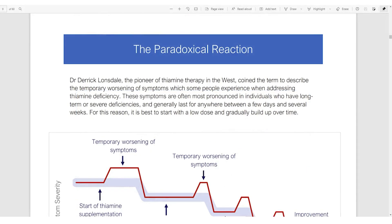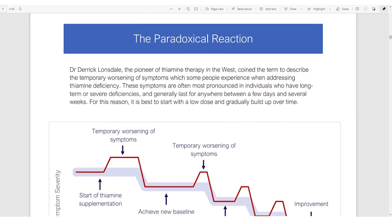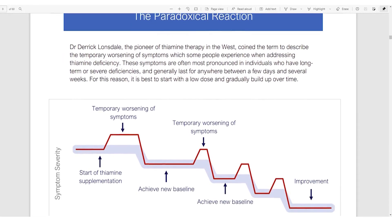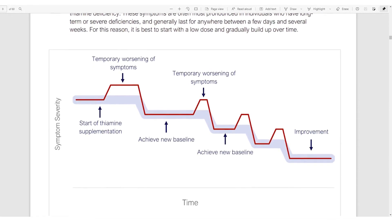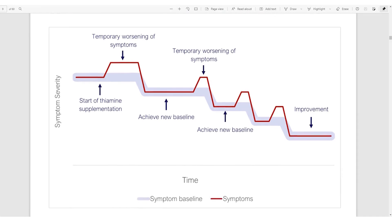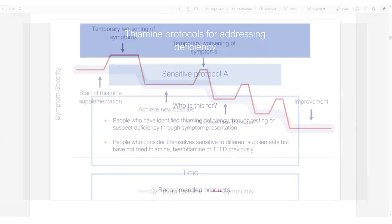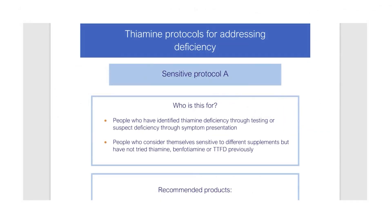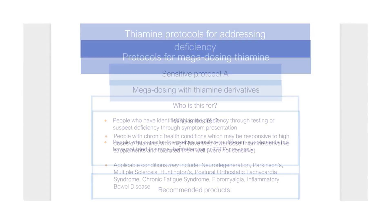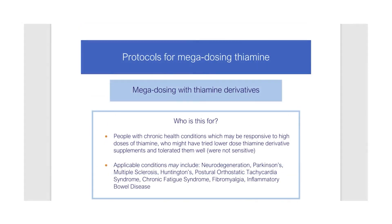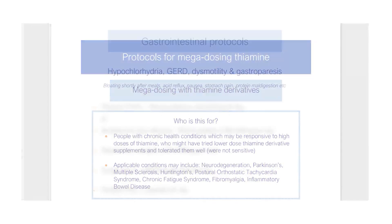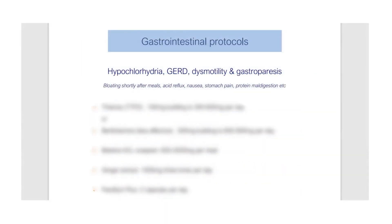Next, we look at the paradoxical reaction, where some people get side effects or increased symptoms when they start taking thiamine. We look at why that occurs, how to dose it, when to increase the dose, when to reduce it, or when to maintain it. We have protocols for sensitive people, for non-sensitive individuals, and how to megadose with different forms such as the salts or the thiamine derivatives.